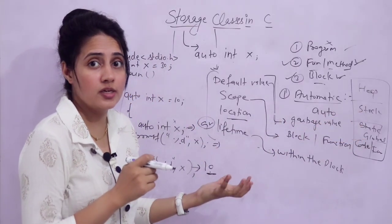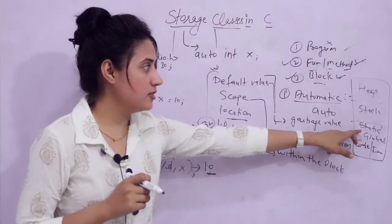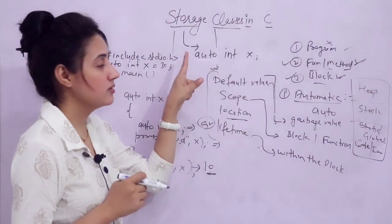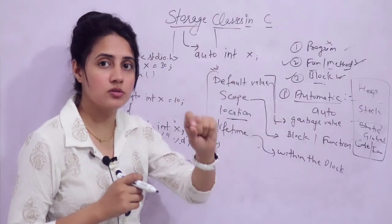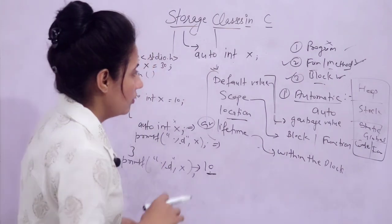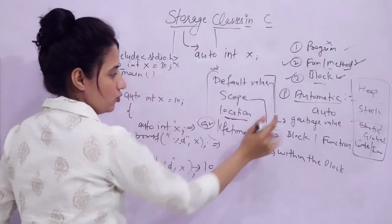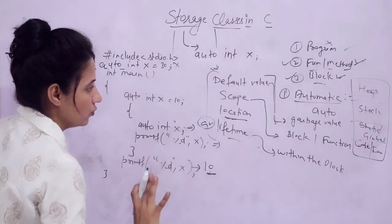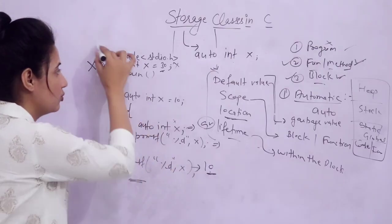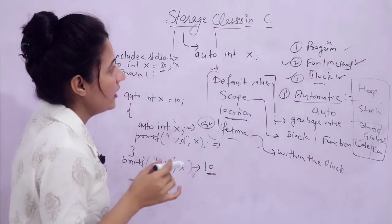All local variables are stored on the stack, whereas static and global variables have a different memory section. If you use the register storage class, those variables are stored in CPU registers — we will discuss that in the next video. So to summarize auto storage class: default value is garbage, scope is block or function, lifetime is within the block or function, and location is the stack.